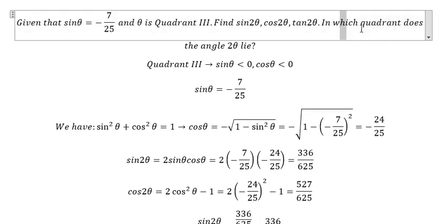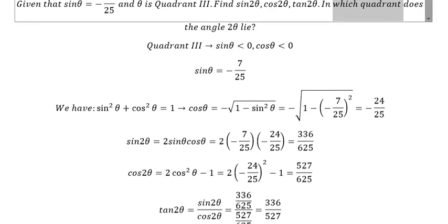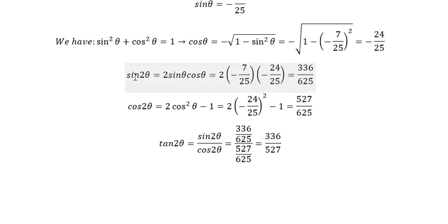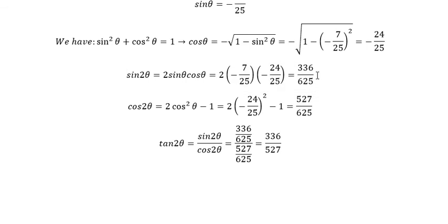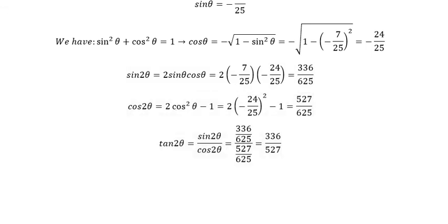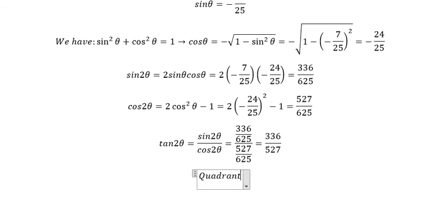Which quadrant does the angle 2θ lie in? So if we look carefully at sin 2θ, cos 2θ, and tan 2θ, we can see that they are all positive numbers. Since sin, cos, and tan are all positive together, that should be quadrant number 1.